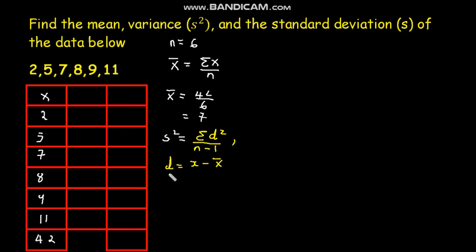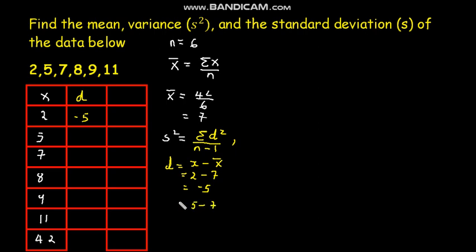The deviation is equal to x minus the sample mean. Let us calculate the deviations. The first sample is 2, and the mean is 7, so the deviation is negative 5. The next value of x is 5 minus 7, so the deviation is negative 2. Let us pause and calculate all the deviations.